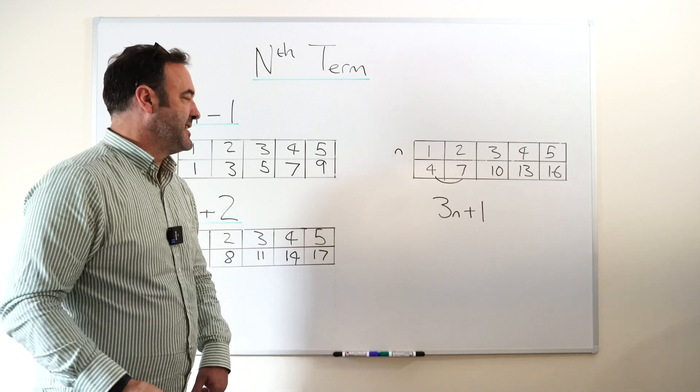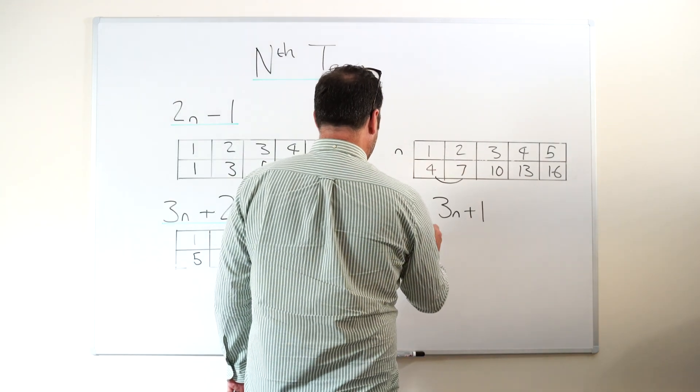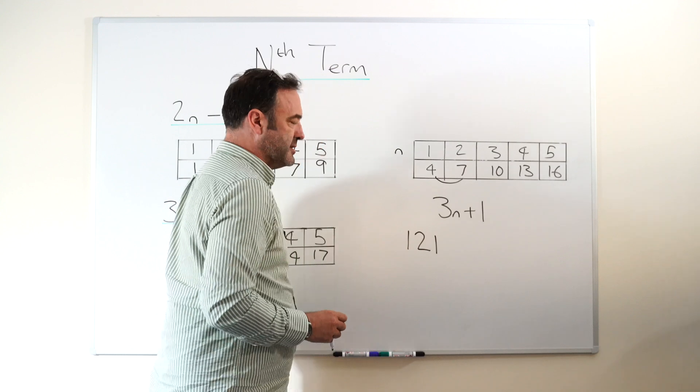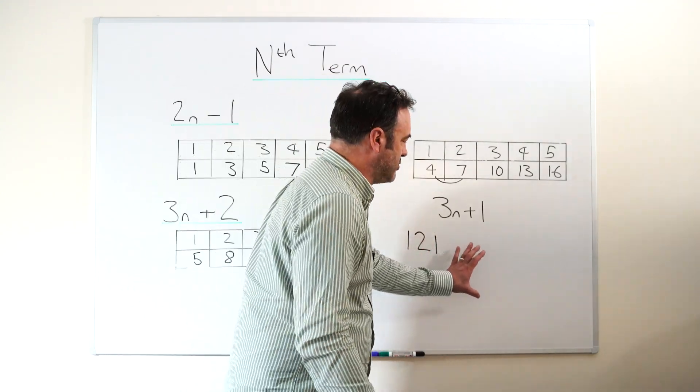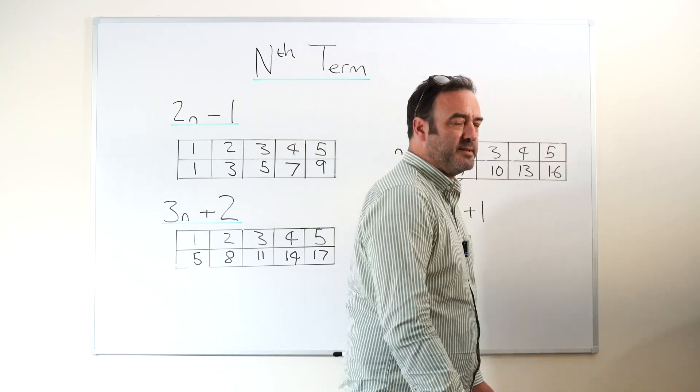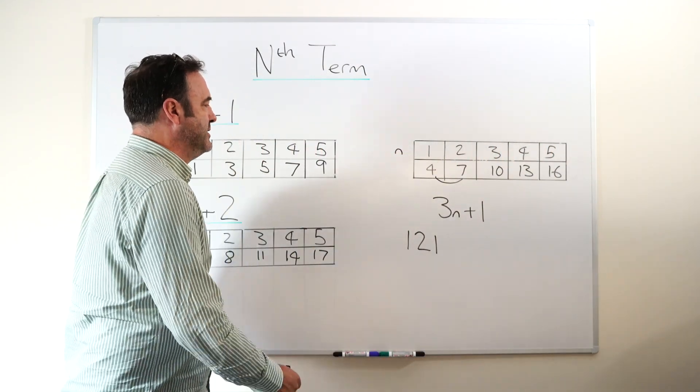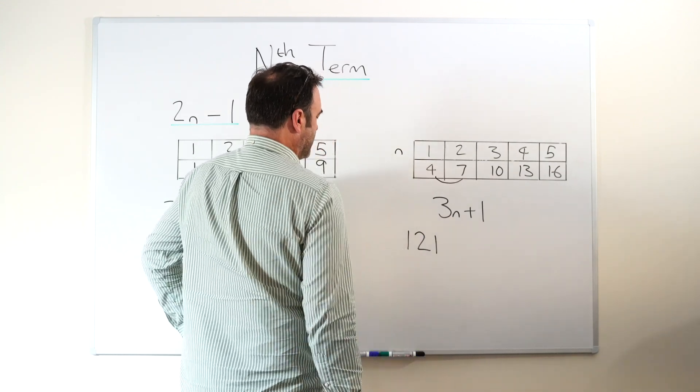But then the classic thing in the exam is they'll say, well, what would it be at position 121 in the sequence? What would the answer be? And some poor old kids would try and work out manually, right, a whole sequence up to position 121. But of course, we've worked out the rule here. So we know that it's three times 121.